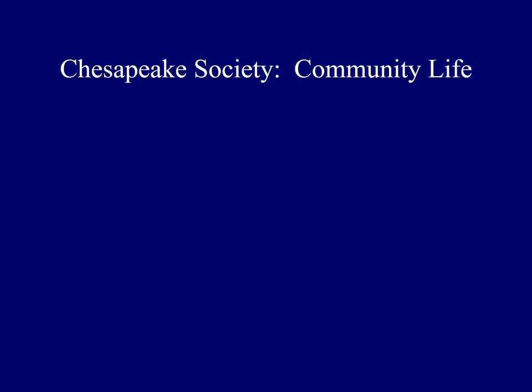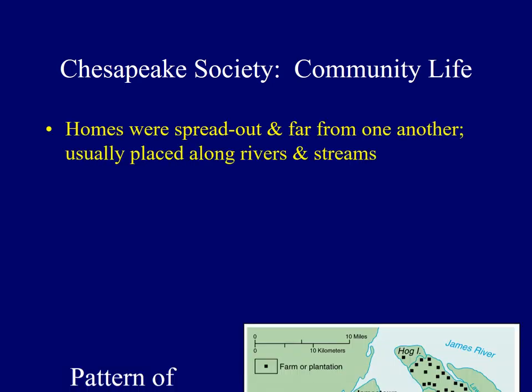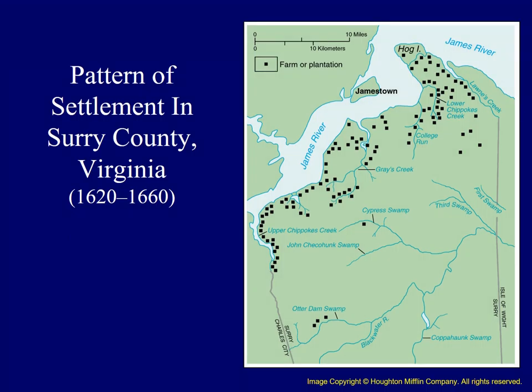In contrast to settlement patterns in New England, in the Chesapeake, plantations were usually spread out, and homes were often situated along the banks of rivers or streams. This map demonstrates the pattern of land settlement in Surry County, Virginia. As you can see, several homes are placed close to the James River or connecting rivers, so as to facilitate the export of tobacco to outside markets. So even the land allotments reflect how tobacco influenced the region.